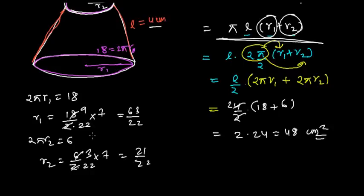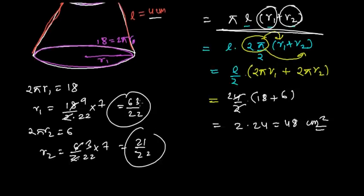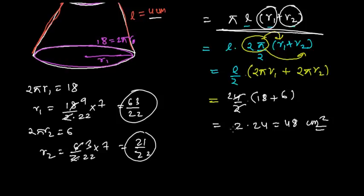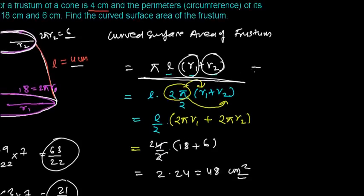So now you know r1, you know r2. You can put the value of 63 by 22 here, and now you can put the value 63 by 22 and 21 by 22, and you can get the answer like this here. That is, this π, which is 22 over 7, l is given by the question, that is 4, and r1 recently you found out, 63 by 22, and 21 by 22.